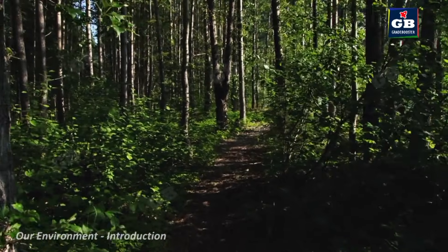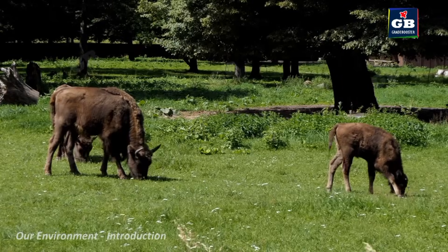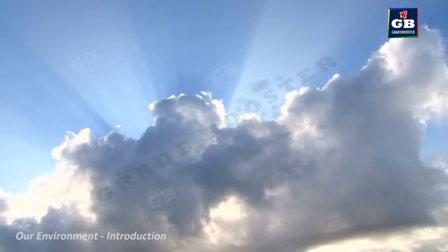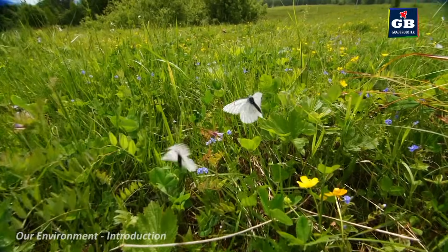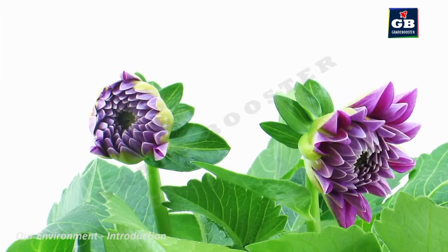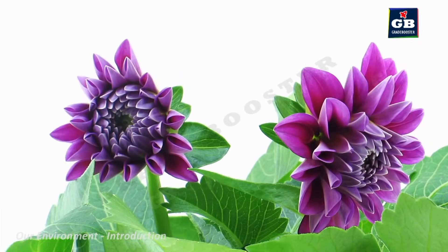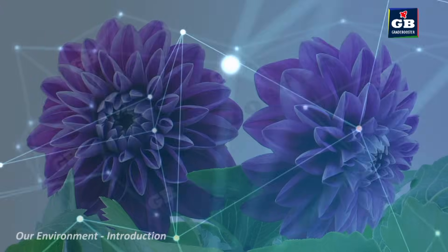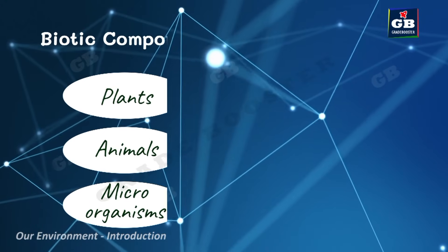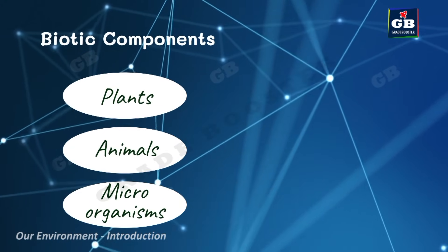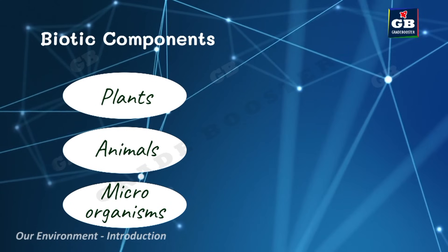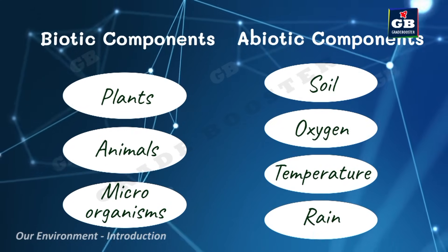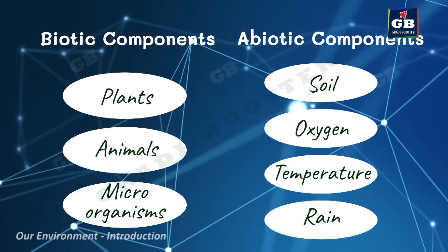In nature we will find plants, animals, human beings, microorganisms, soil, water, wind, temperature, oxygen, etc. These components of the environment interact with one another to maintain a balance in nature. The living components of the environment are called biotic components, and the non-living components are called abiotic components.